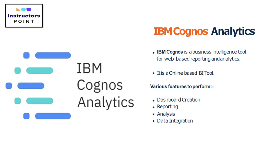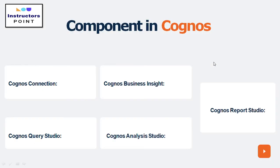As a BI tool, you can create dashboards, create reports — which provide detailed information about graphs — analyze your data, and integrate your data with different platforms like MySQL, Oracle, and other databases. You can also integrate IBM Cognos Analytics with platforms like Slack. The different components in Cognos include: Cognos Connection, Cognos Business Insight, Cognos Query Studio, Analysis Studio, and Report Studio.